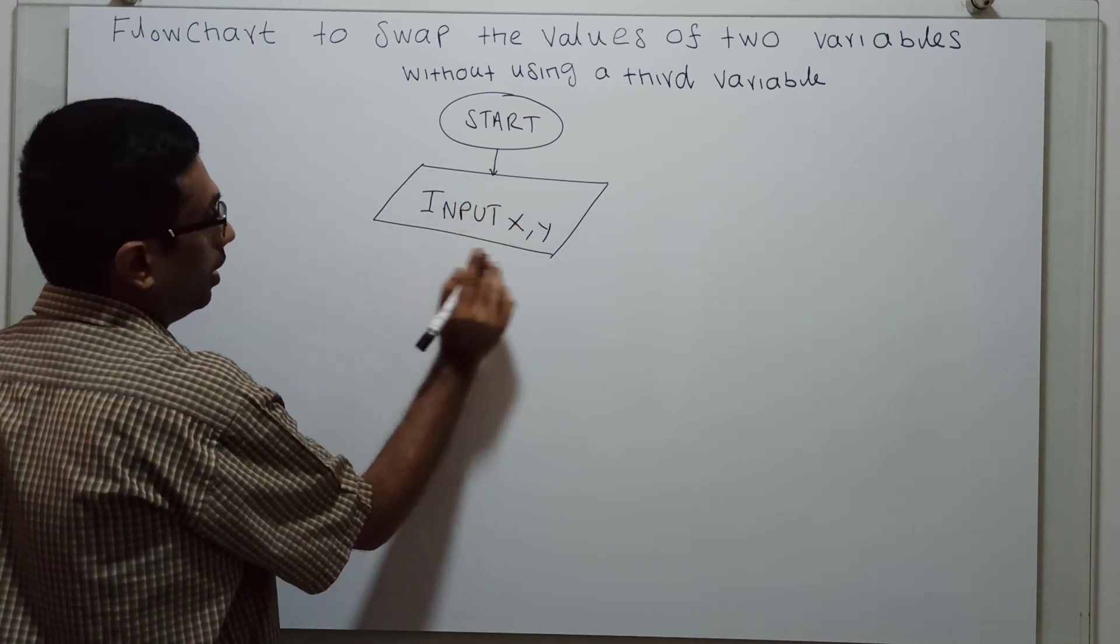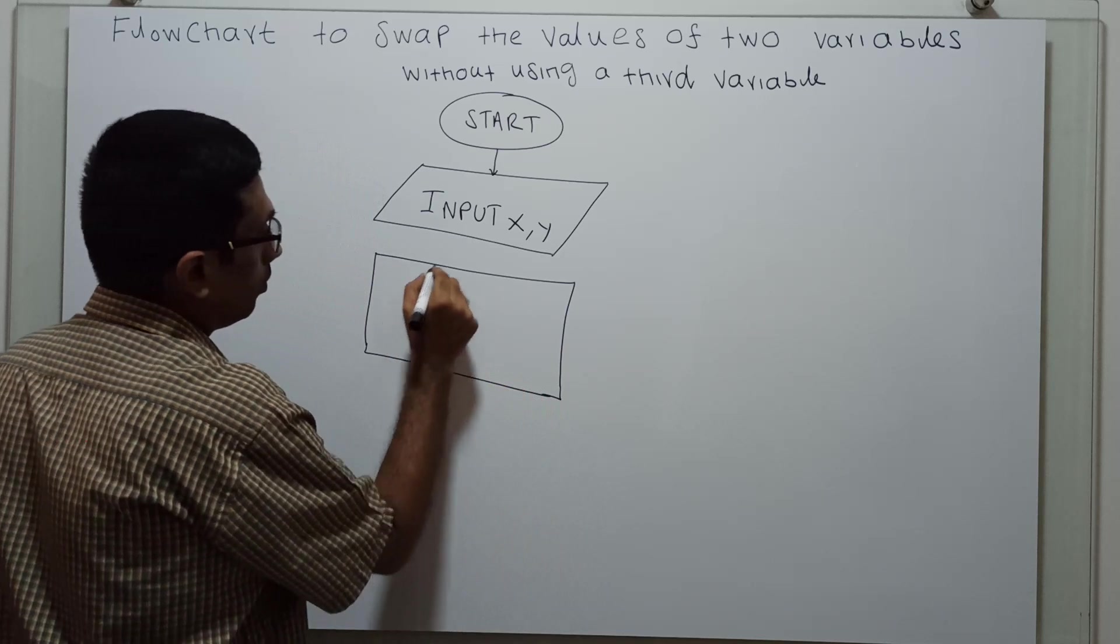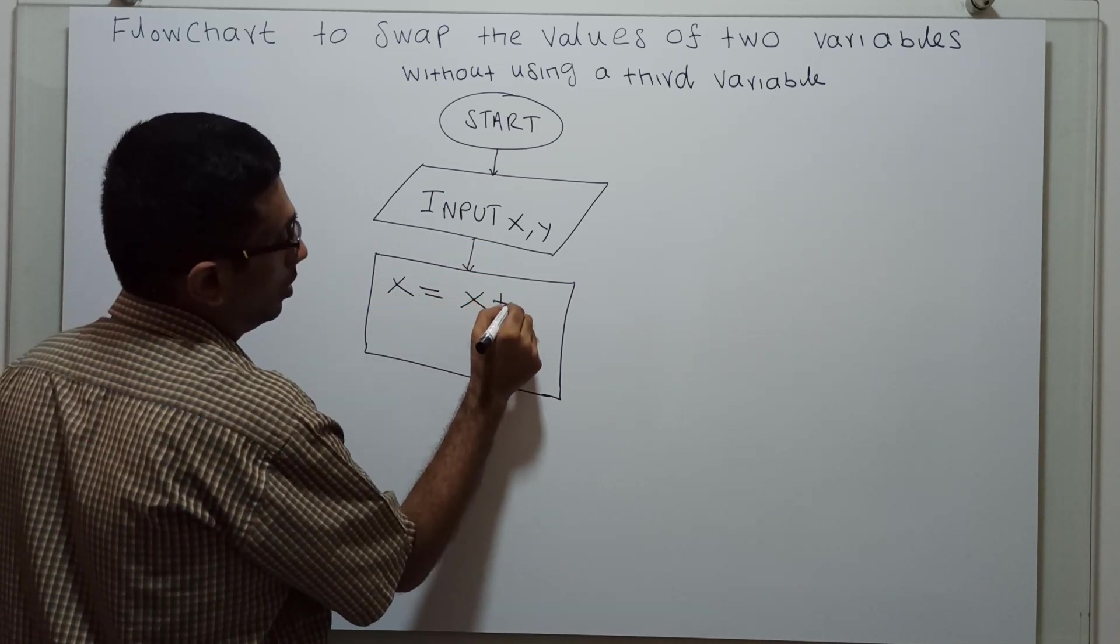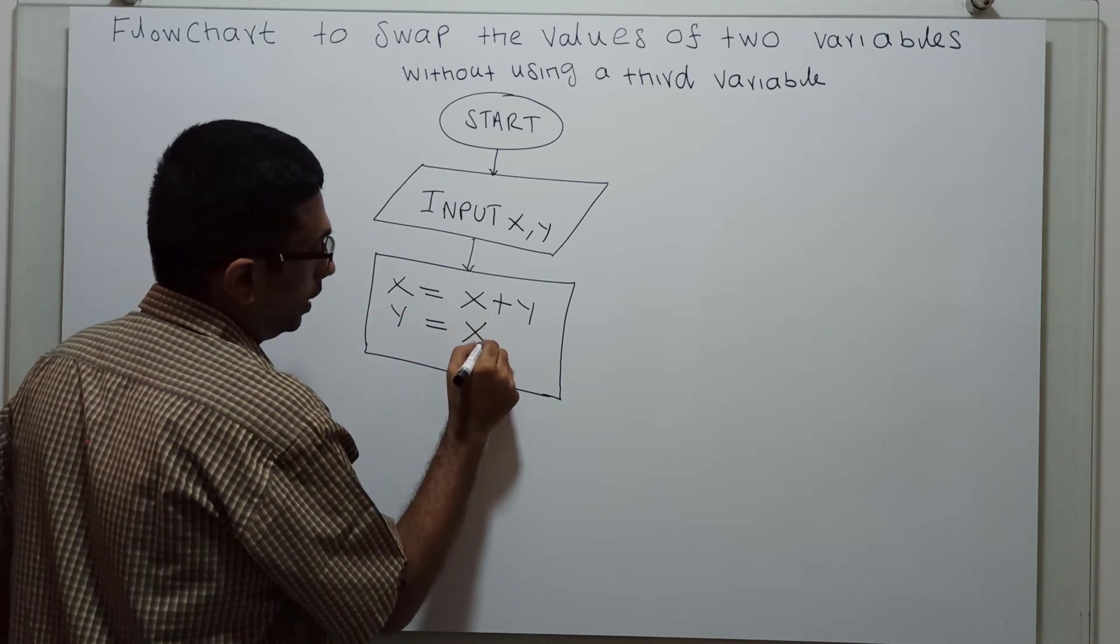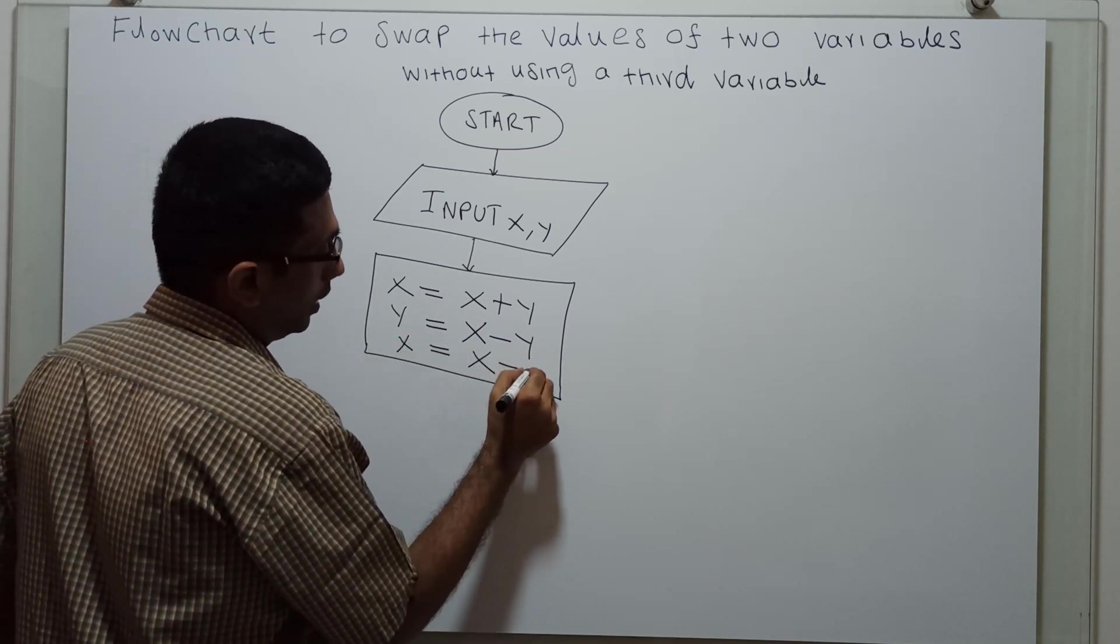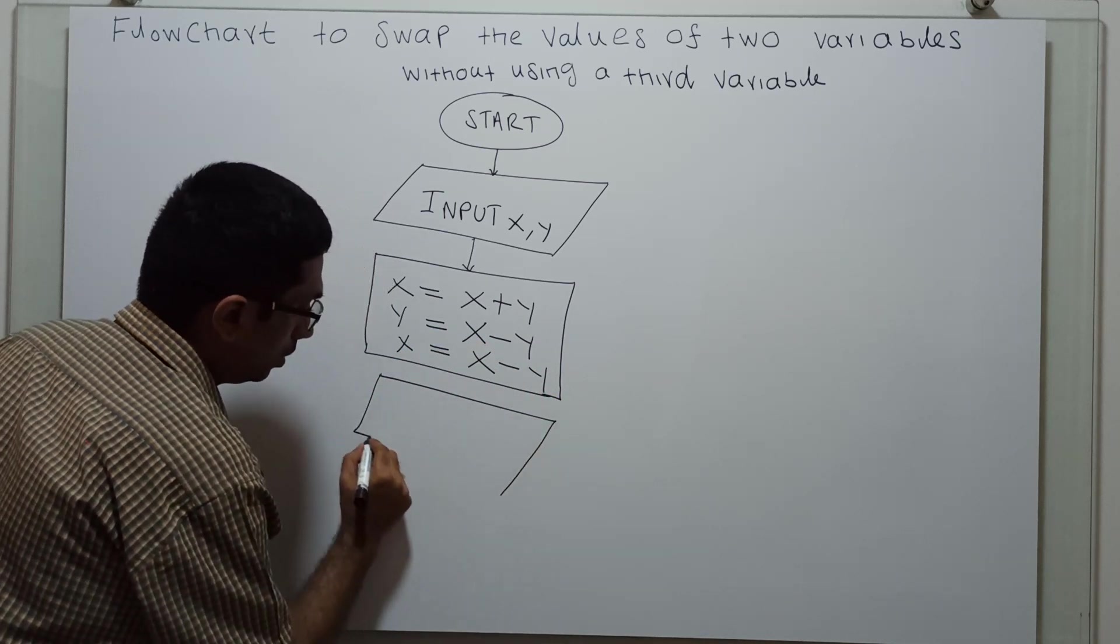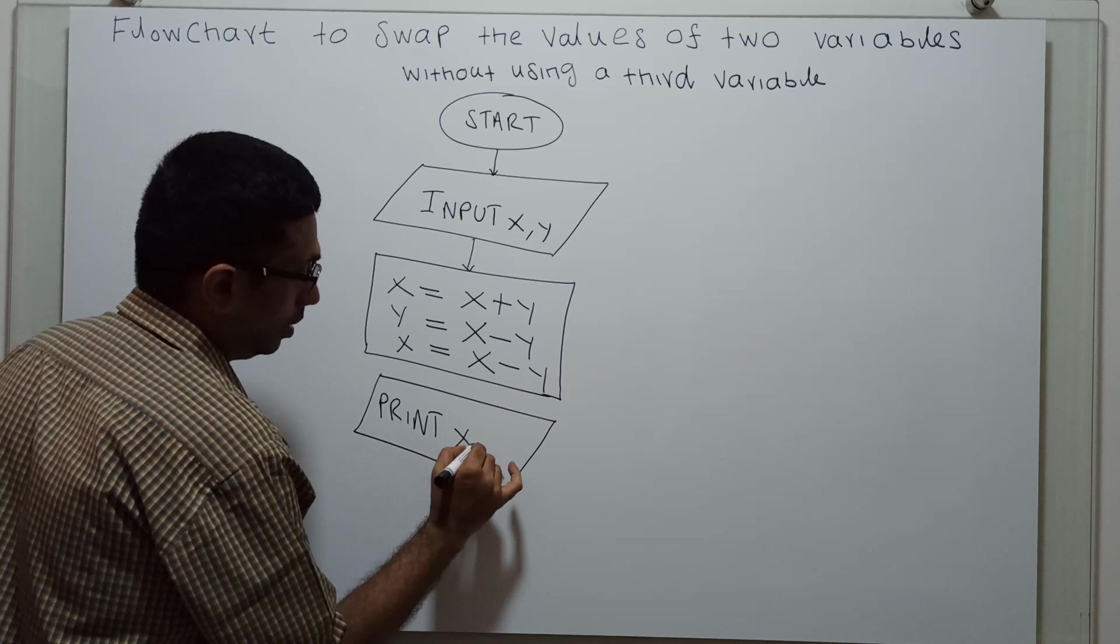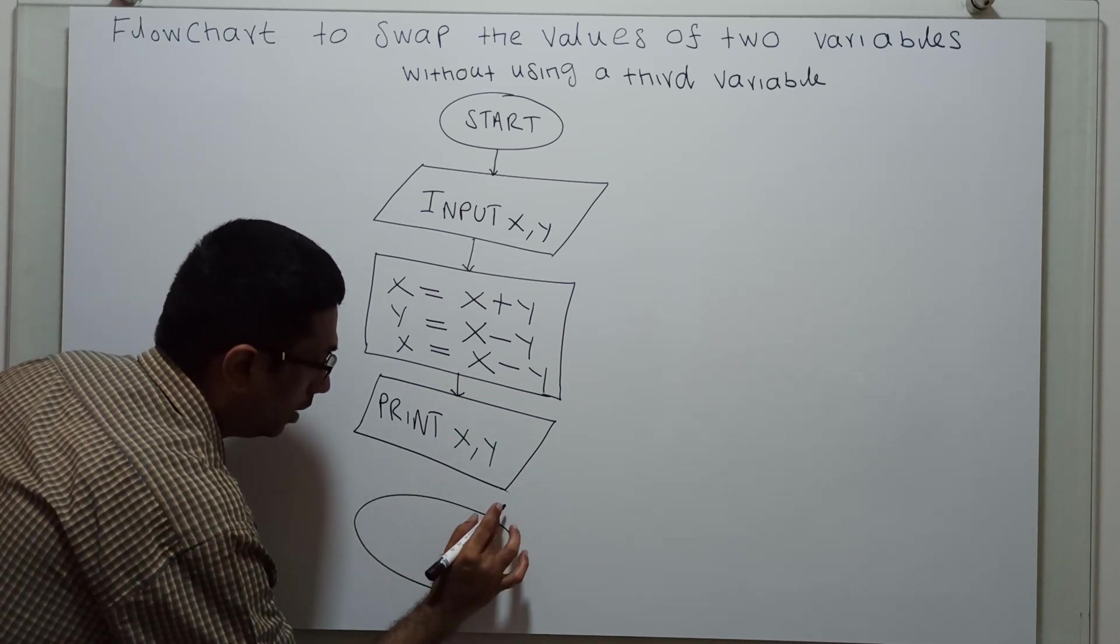Now I am going to write the logical part. That is x equals x plus y, y equals x minus y. Now I am going to print the value: print x comma y. So this is the logical end of the flowchart.